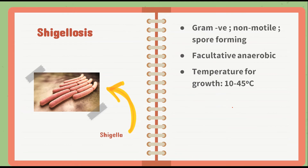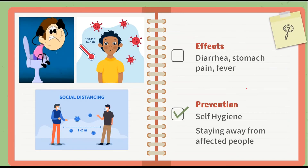Next we have Shigellosis, caused by Shigella, which is a gram-negative, non-motile, non-spore-forming, facultative anaerobic bacteria. Its main sources are water and water bodies. The temperature for growth of Shigella is around 10 to 45 degrees Celsius. Effects include diarrhea, stomach pain, and fever. Prevention includes self-hygiene and staying away from affected people, as social distancing helps prevent the spread of most diseases.